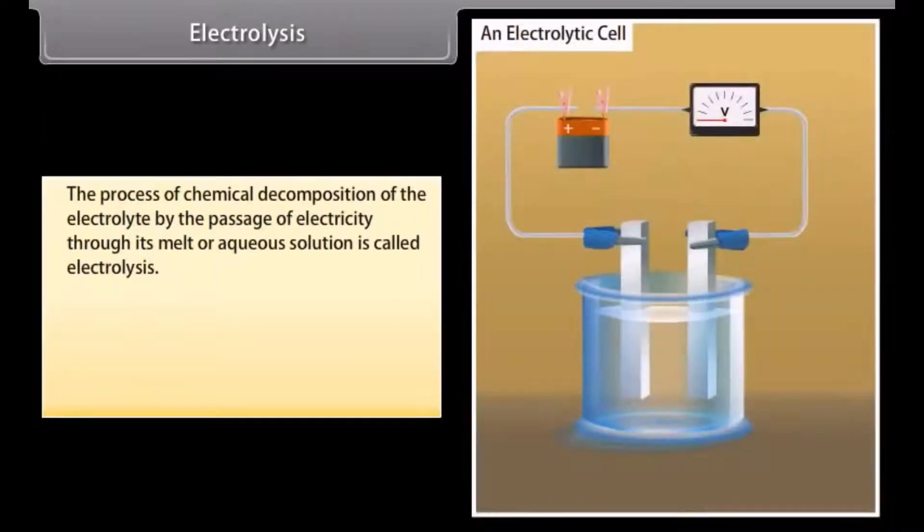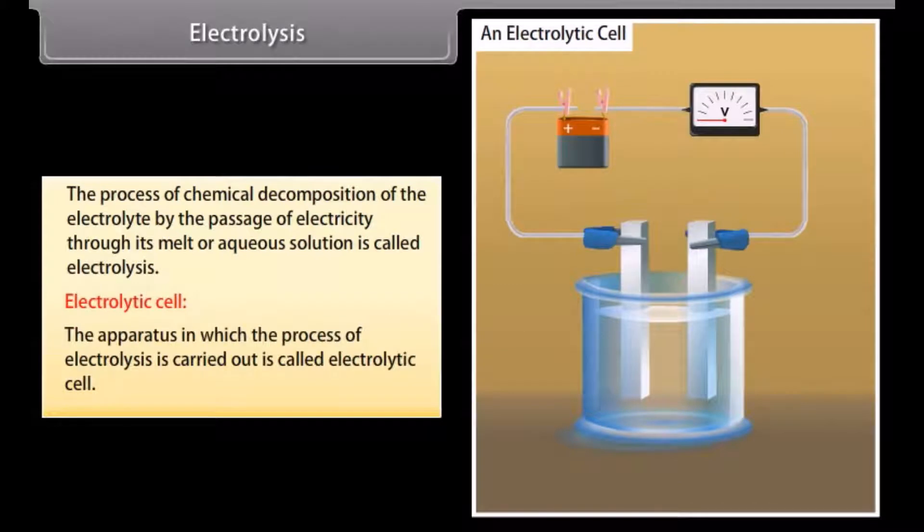Electrolysis. The process of chemical decomposition of the electrolyte by the passage of electricity through its melt or aqueous solution is called electrolysis. Electrolytic cell. The apparatus in which the process of electrolysis is carried out is called electrolytic cell.